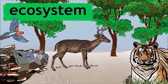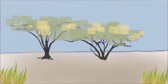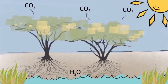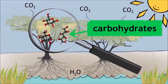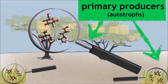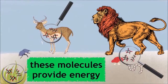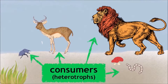An ecosystem is a community of living organisms interacting with each other and the environment around them. Ecosystems are built from plants upwards, as they harness CO2 and water and, using the sun's energy, create energy-containing molecules called carbohydrates. This is why they are often referred to as primary producers or autotrophs within the ecosystem.